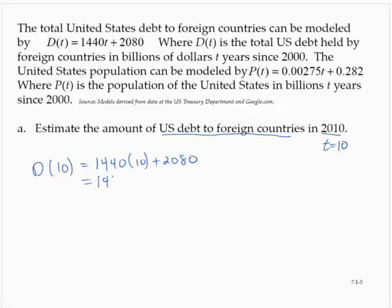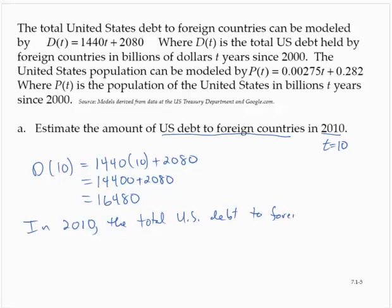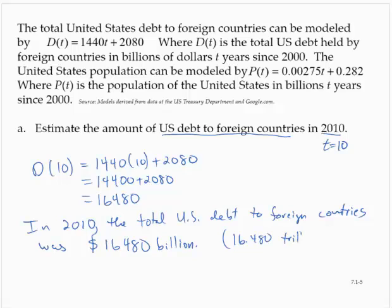So that would be 14,400 plus 2,080, which equals 16,480. In 2010, the total US debt to foreign countries was $16,480,000,000,000.